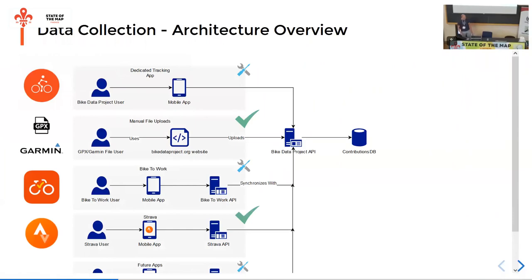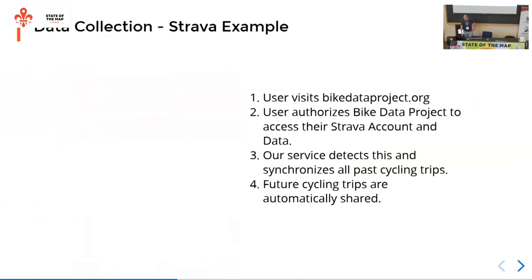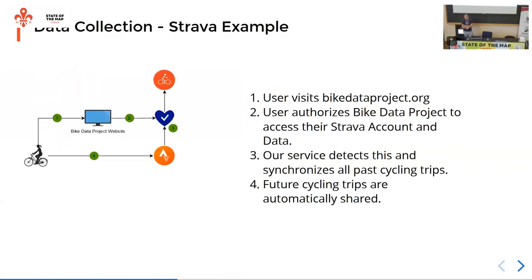How does it work? We try to collect data from different apps — you can see Strava here, you can upload Garmin traces or GPX traces directly. We can also link other apps if you have your own app tracking bicycle data. Everything ends up in one database. For Strava, which is definitely the most popular way to do it, you go to the Bike Data Project website, link your account, your data gets synchronized once, and future rides will get synchronized to this data set.